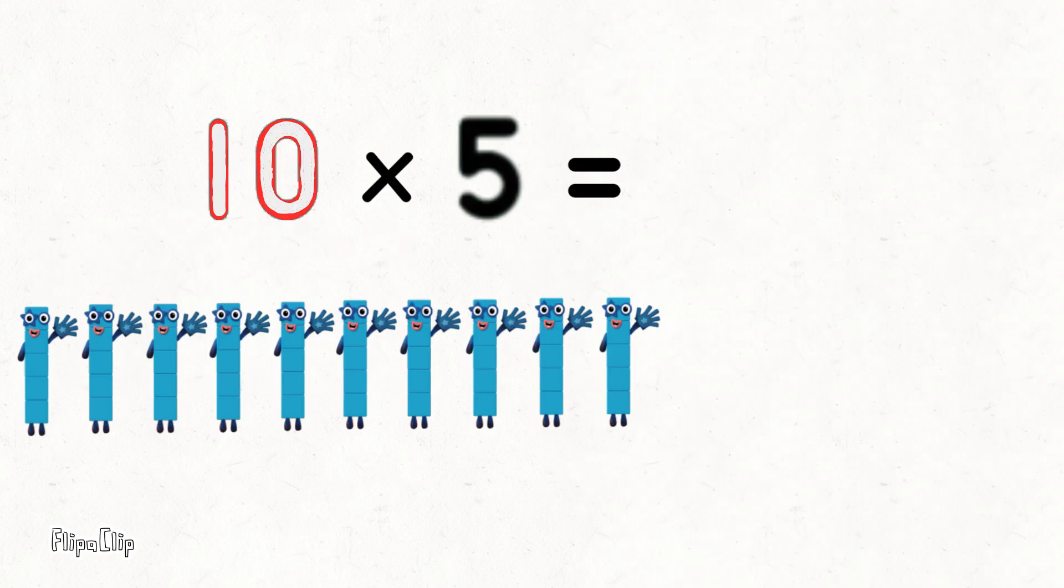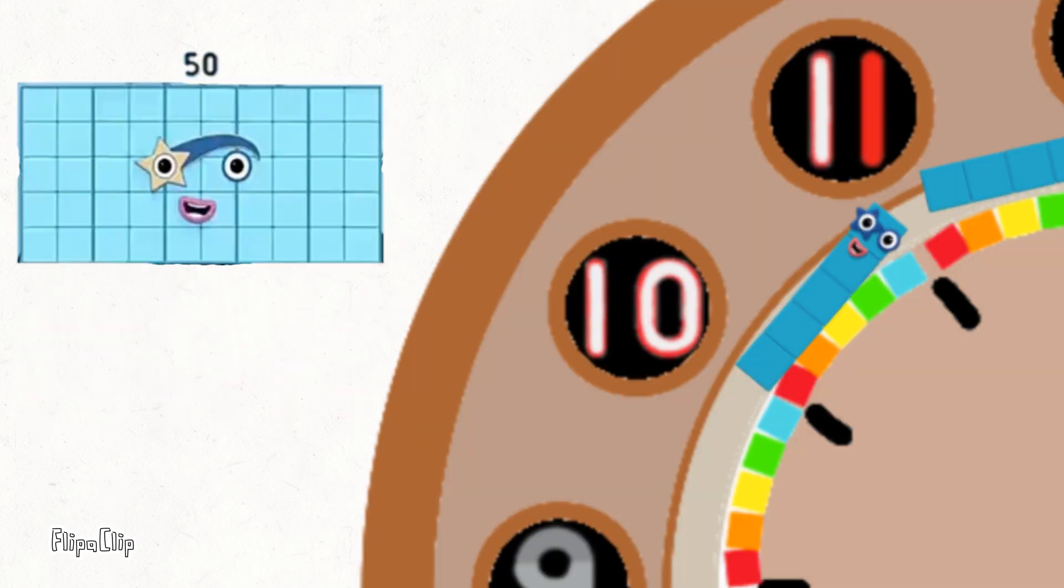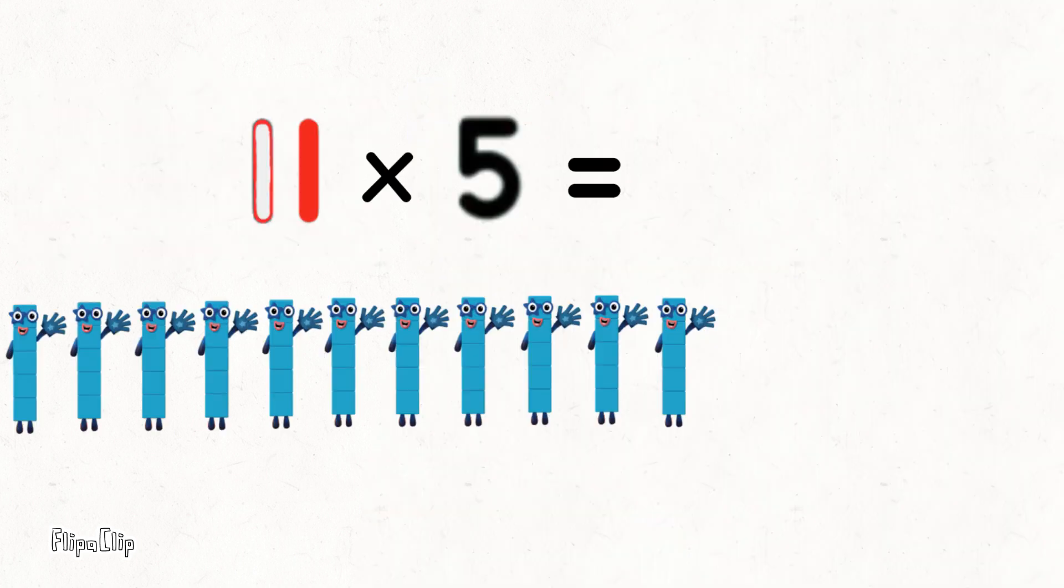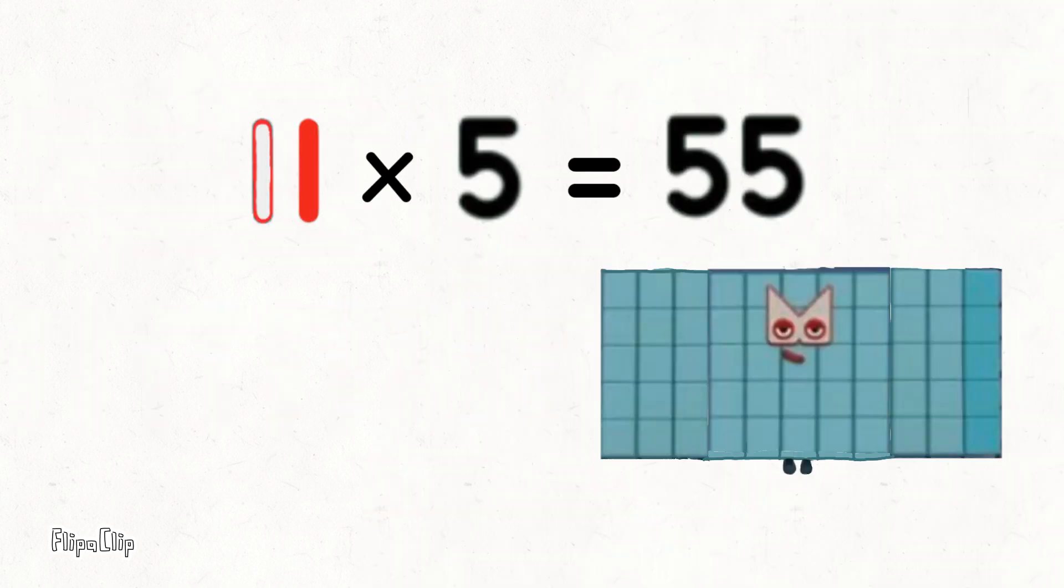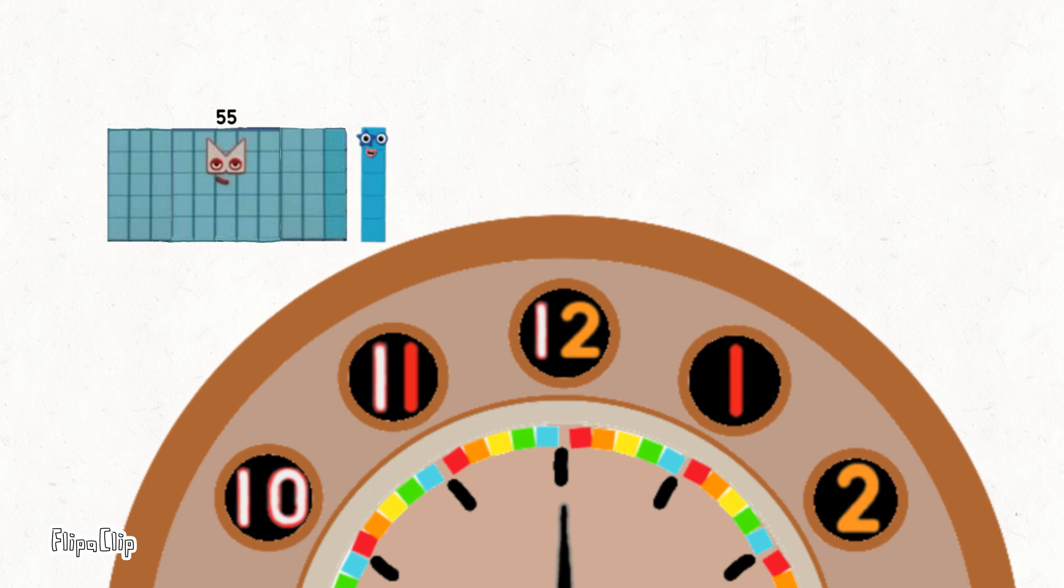Ten lots of five are fifty. Come on, all the way around this clock. Eleven lots of five, fifty-five. At sixty we stop, cause we're back to the top.